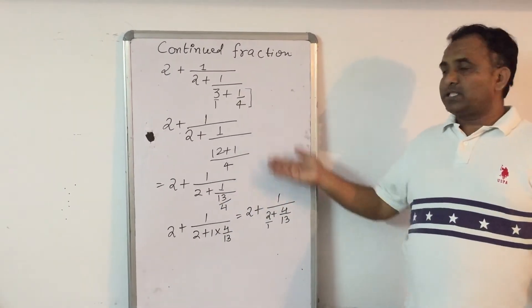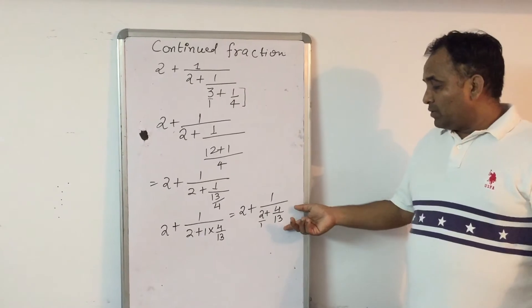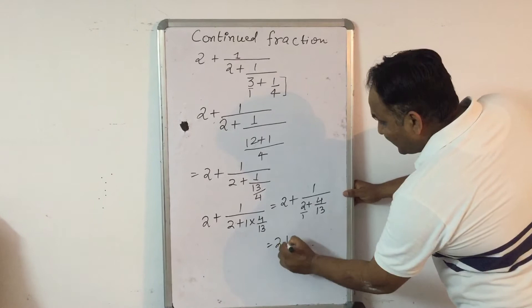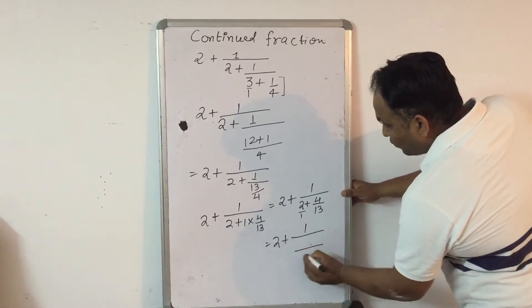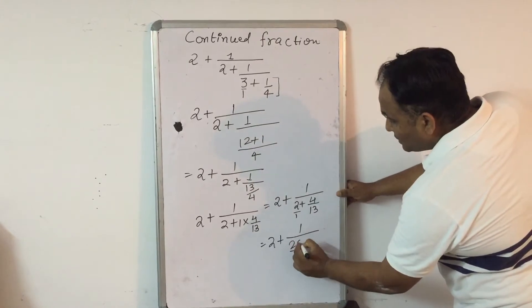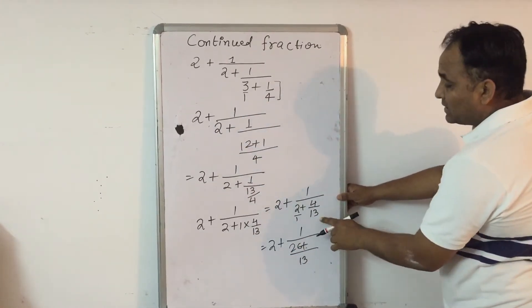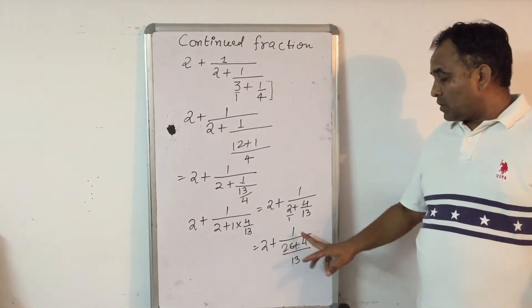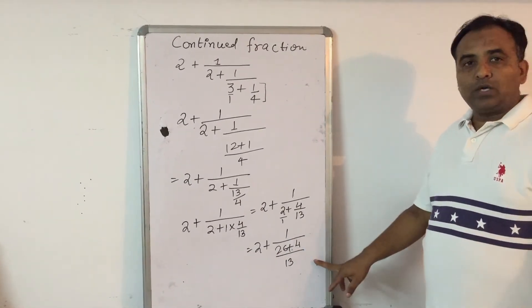I hope the step is clear. Now again, we will take the LCM. The LCM of 13 and 1 is 13. So it will be 2 plus 1 upon, where the denominator becomes 2 into 13 plus 4, which is 26 plus 4, equals 30 upon 13. So we get the term 2 plus 1 upon 30 upon 13.